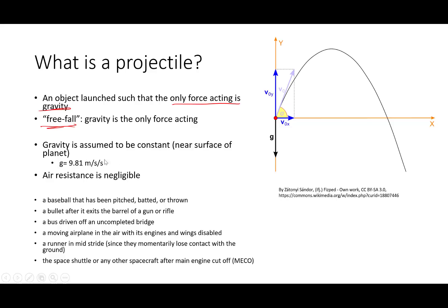A couple of assumptions that we make about projectiles is that the force of gravity is assumed to be constant, which is a good assumption near the surface of a planet. If we're talking about rockets going into space, that's not a great assumption, but near the surface of the earth it's fine. Also, air resistance is going to be negligible. If we were to incorporate air resistance, our analysis would get much more complex.